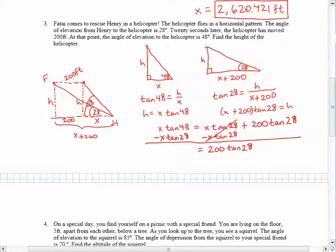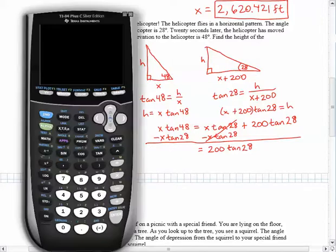And so now I can actually do this, right? So multiplying x times the tangent of 48 and then I'm subtracting x times the tangent of 28 really means that I am just subtracting the two tangents together.